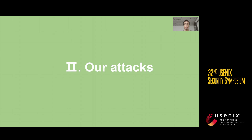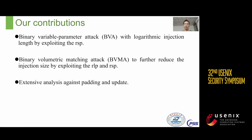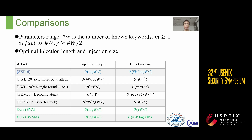In our work, we proposed two new volumetric injection attacks achieving higher recovery rates by consuming fewer injection files. Our first attack, Binary Variable Parameter Attack (BVA), exploits RISP and requires only O(log n) injection files to achieve around 80% recovery rate. Our second attack, BVMA, may further reduce the injection size. We also tested the effectiveness of our attacks against well-known padding schemes, and optimized our attacks for scenarios where the client updates a large number of files during our attacks. Our attacks achieve optimal injection length and rely only on RLP or RISP without identifying injected files.